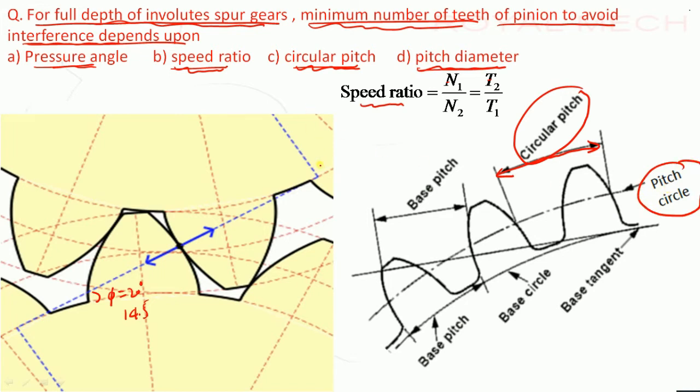So to avoid interference the pressure angle should be 20 degree. And speed ratio does not affect the interference as well as circular pitch and pitch circle diameter. So therefore option A is correct option.